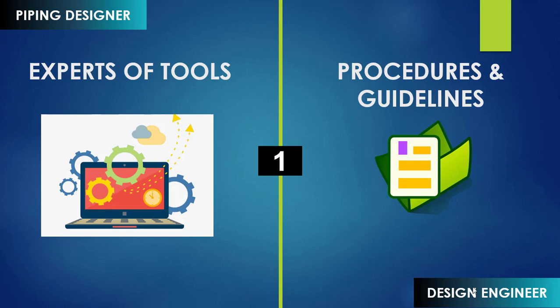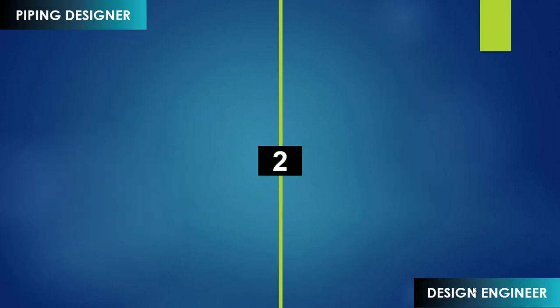If you are trying to become a design engineer, then you must slowly develop an understanding about the procedures, guidelines, methods, and engineering practices over a period of time. Now let's go to point number two, which is about pipe routing skill.